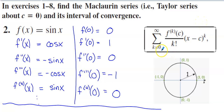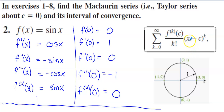That Taylor series always starts at an index value of zero and goes onward to infinity. We always have the rule for the coefficients being the k-th derivative evaluated at where the series is based, divided by k factorial, and then we multiply that by x minus c raised to the k-th power.